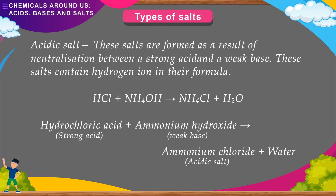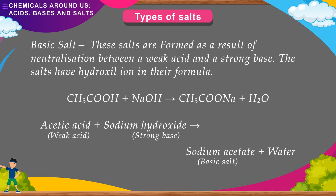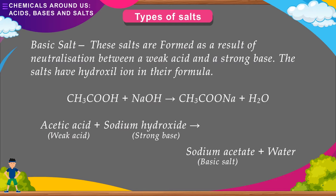Acidic salts are formed by neutralization between a strong acid and a weak base; they contain hydrogen ions in their formula. For example: HCl + NH₄OH → NH₄Cl + H₂O (hydrochloric acid — strong acid + ammonium hydroxide — weak base → ammonium chloride — acidic salt + water). Basic salts are formed by neutralization between a weak acid and a strong base; the salts have hydroxyl ions in their formula. CH₃COOH + NaOH → CH₃COONa + H₂O (acetic acid — weak acid + sodium hydroxide — strong base → sodium acetate — basic salt + water).